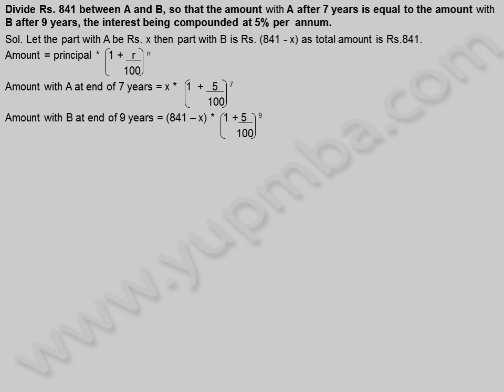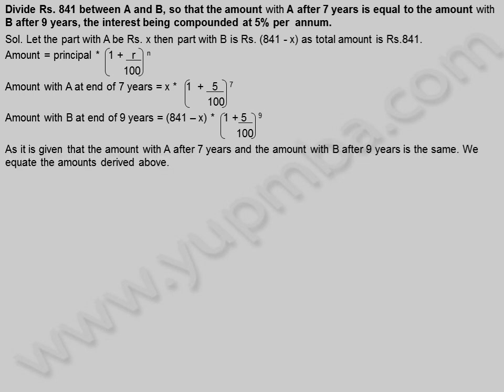Amount with B at end of 9 years is equal to 841 minus X into 1 plus 5 by 100 whole power 9. As it is given that the amount with A after 7 years and the amount with B after 9 years is the same, we equate the amounts derived above.